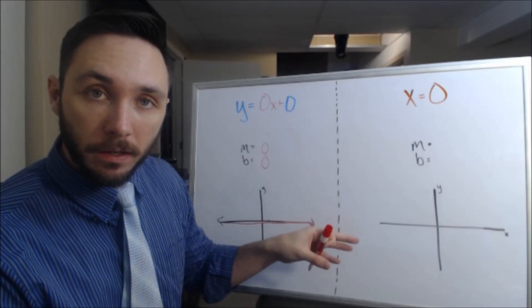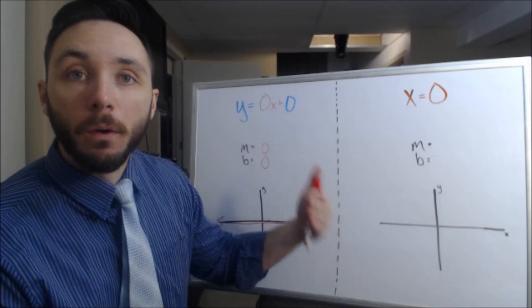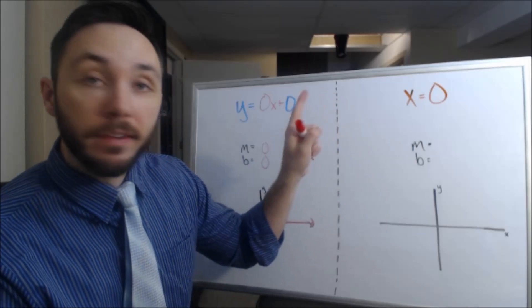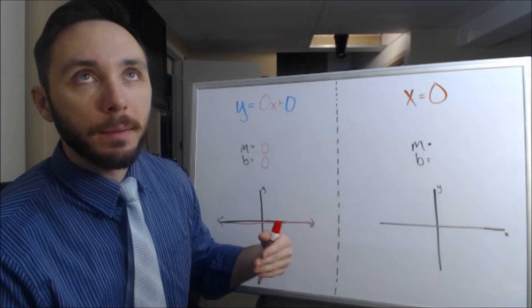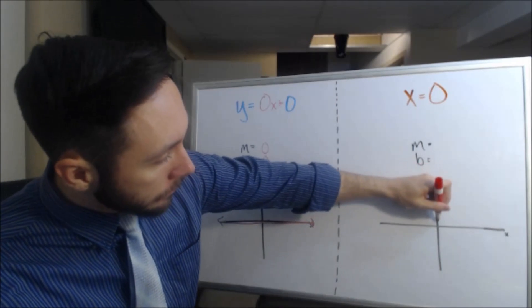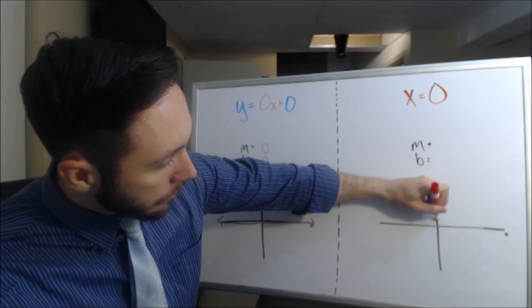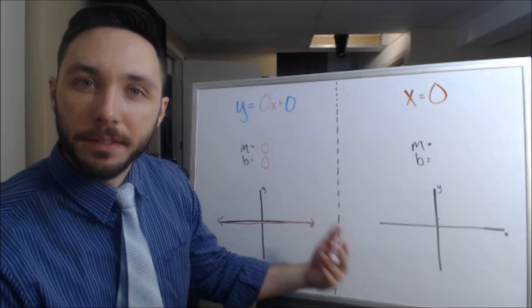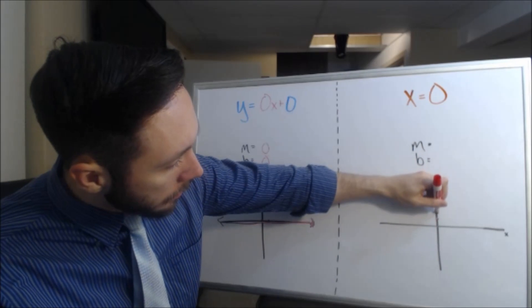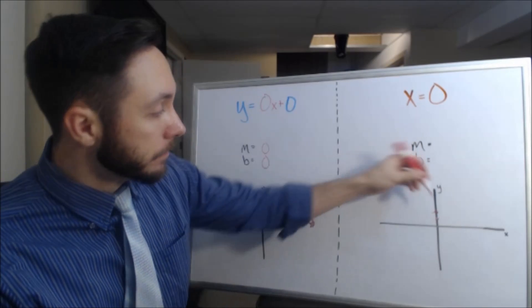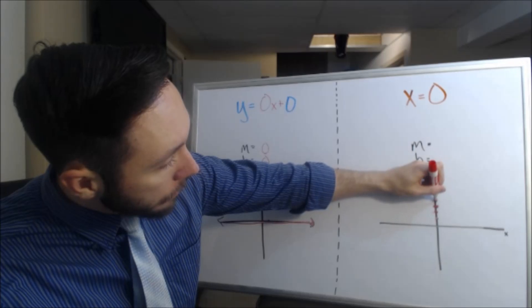Now the way I think about x = 0 is I think every single ordered pair on my line will have an x value of 0. So think about (0, 1). That's right there. Think about (0, 2). That's right there. (0, 3), (0, 4), (0, 5), and so on.